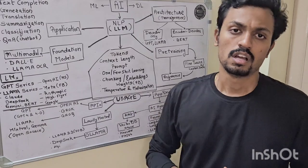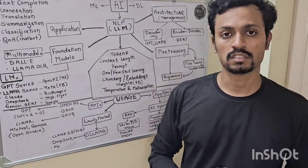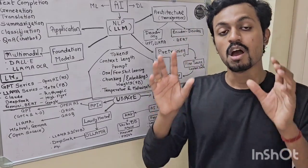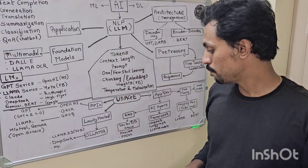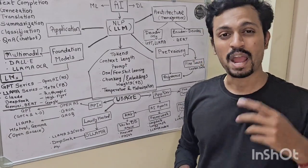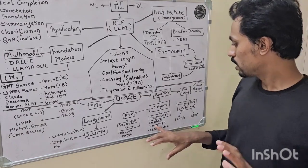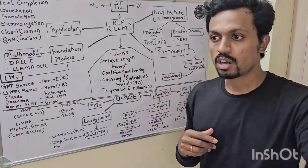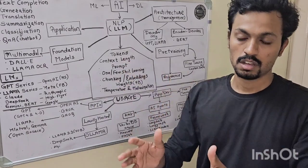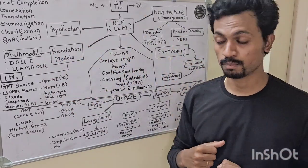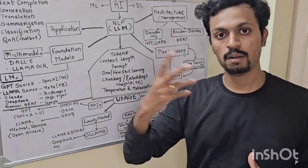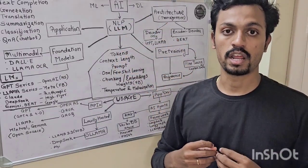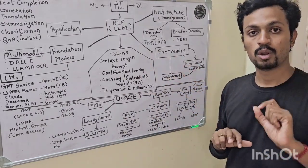RAG is one of the most highly used applications — most customer support systems use it. For storing the vectors, there are vector stores and vector databases. Popular frameworks for this include Pinecone and FAISS. Then if we talk about a model, we ask a question and provide context — the book is the context.